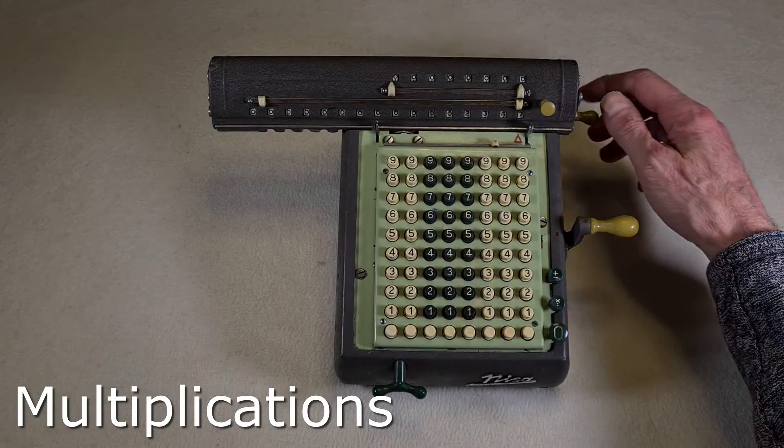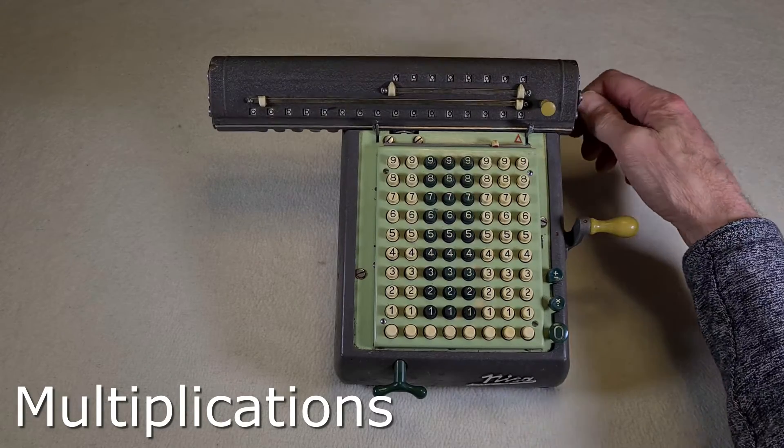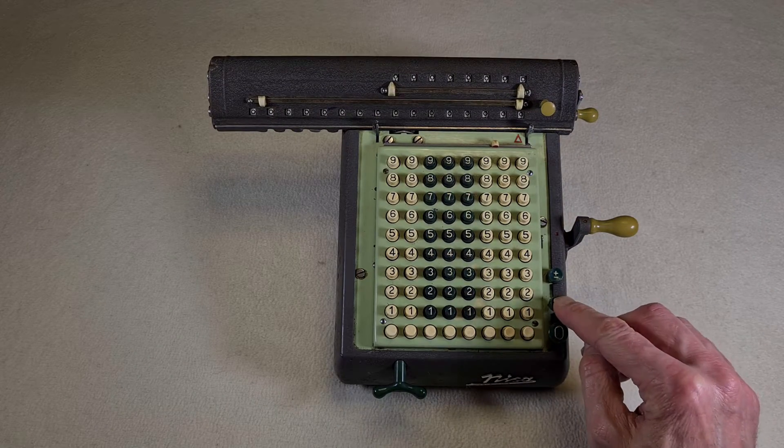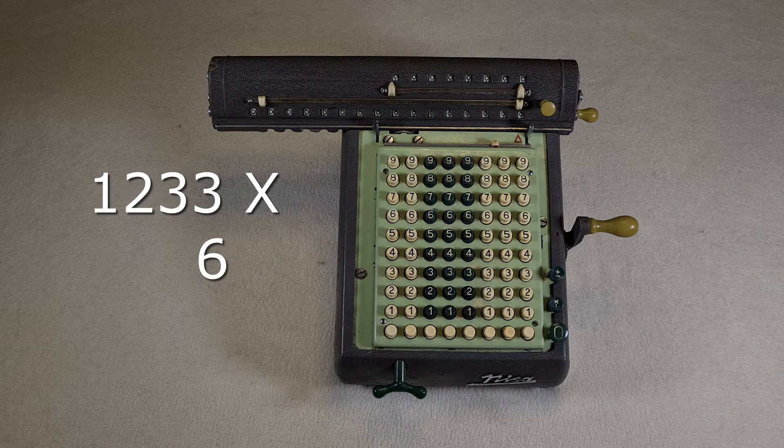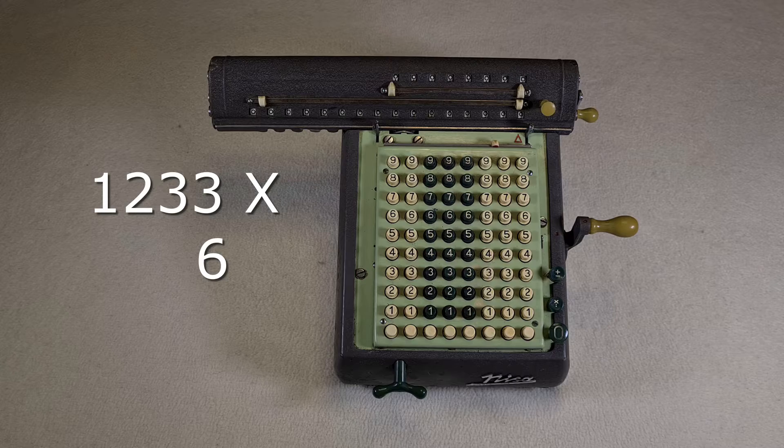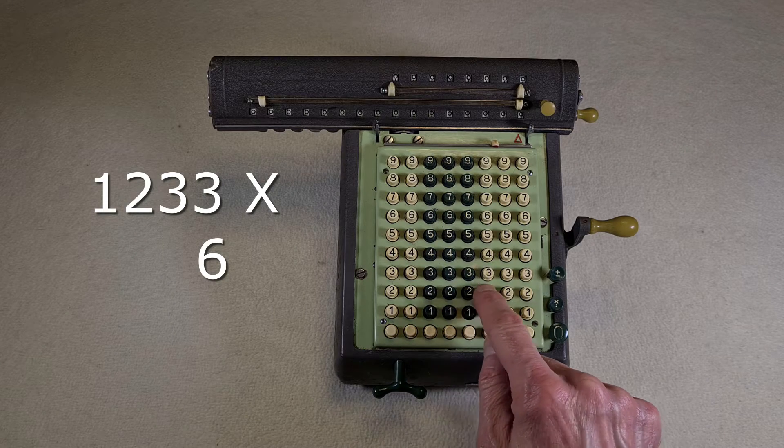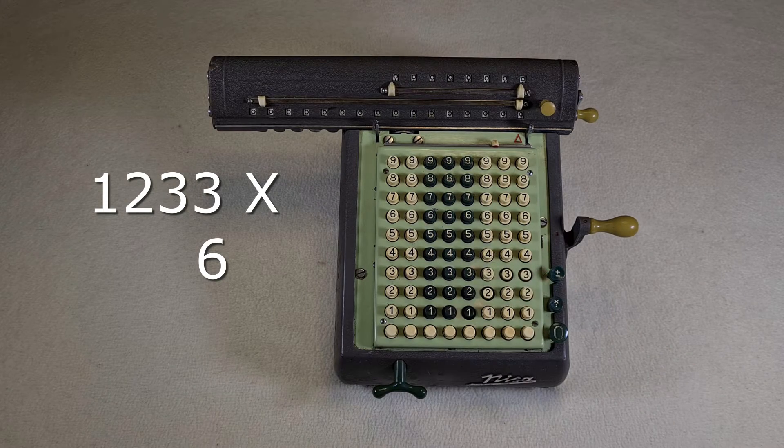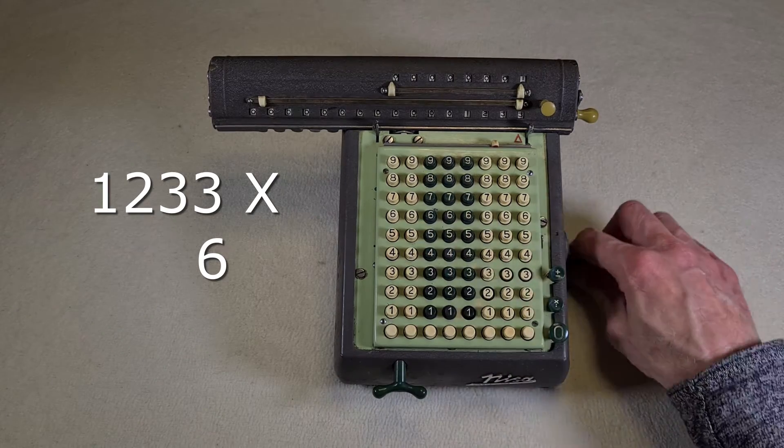Simple multiplication. You set the button here for the multiplications. Let's say 1233 by 6. You set 1233 in the keyboard, and turn the crank 6 times.